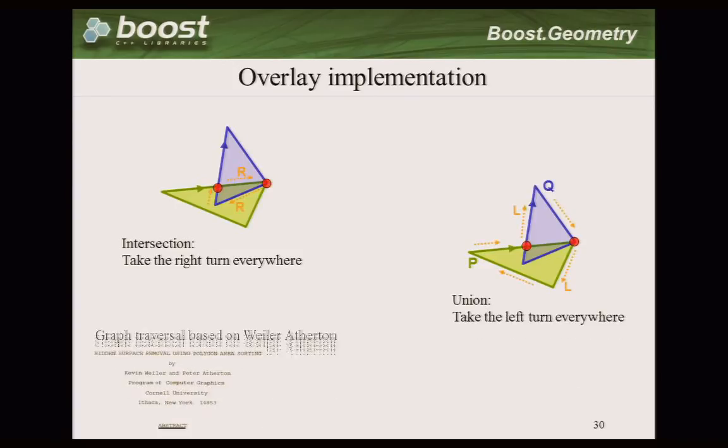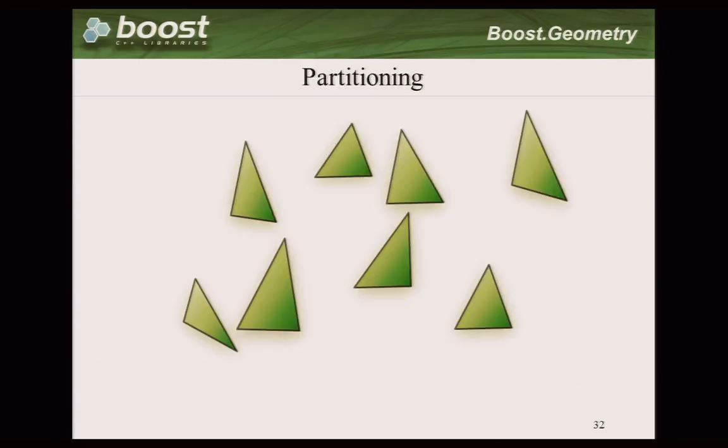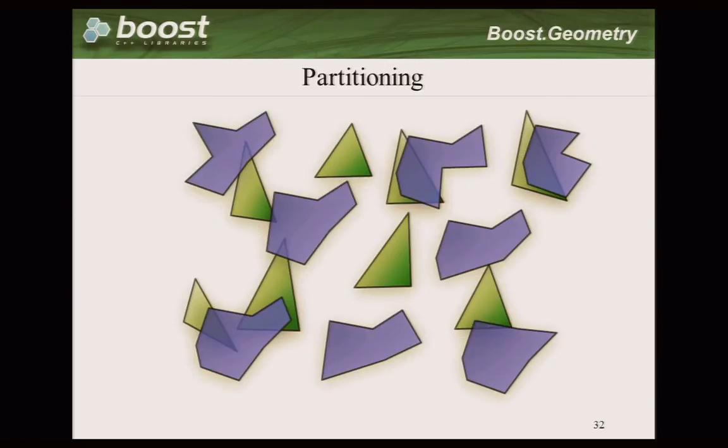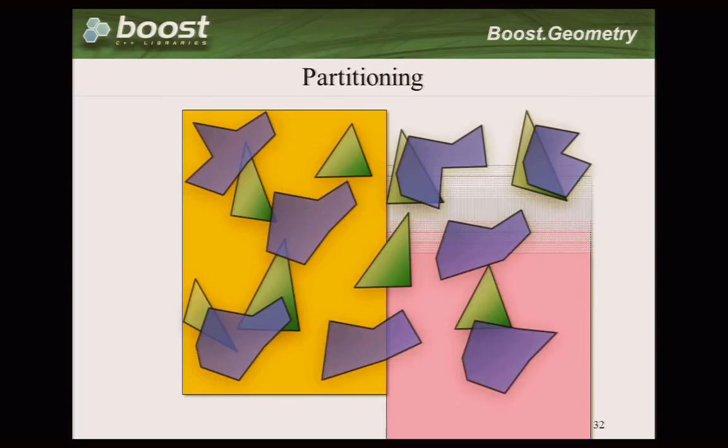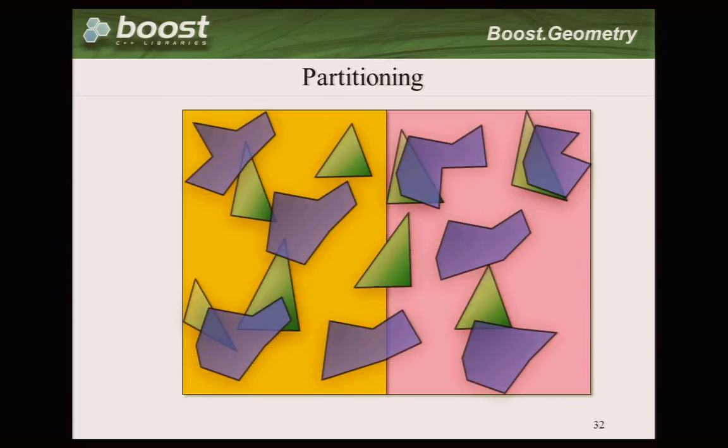Internally we use a spatial index now. Internally we use partitioning. If you have two multi-polygons, one green, one blue, and you can calculate the intersection points between the two, we first divide it in two.